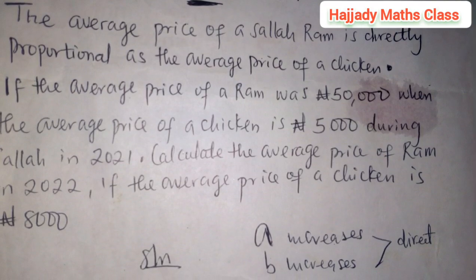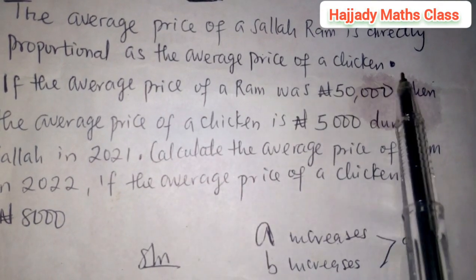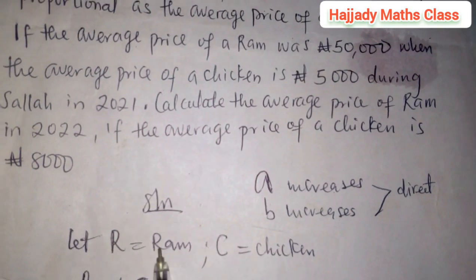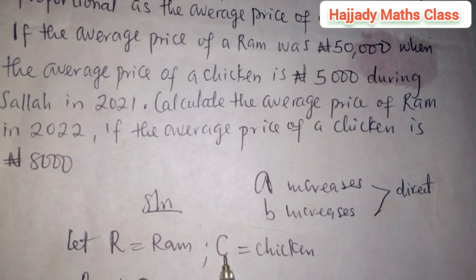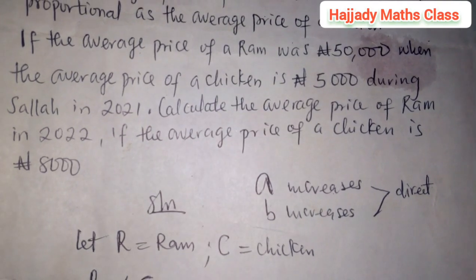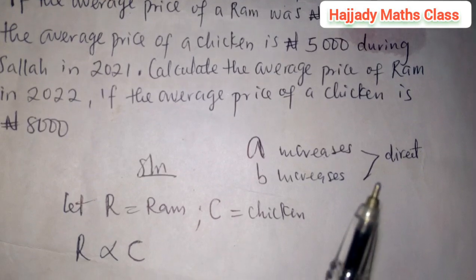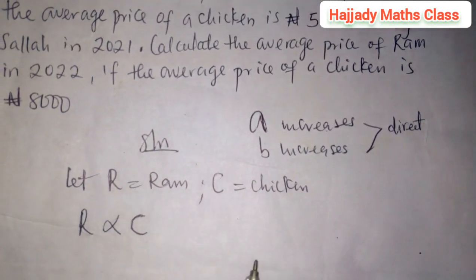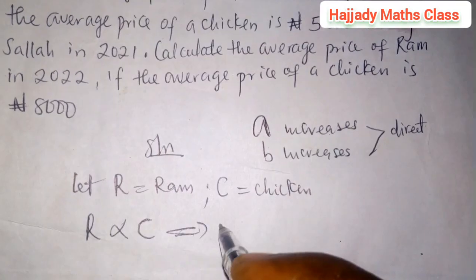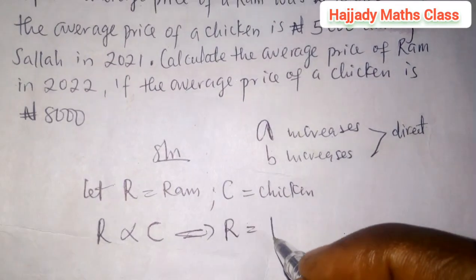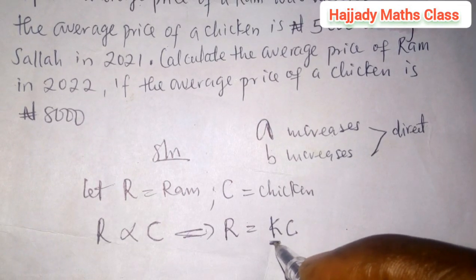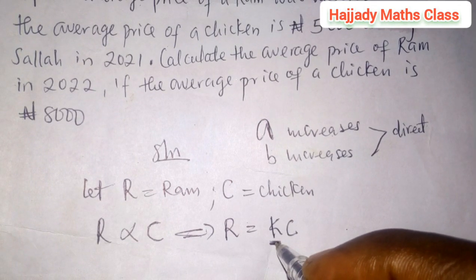Now let's go straight to our question. Let R be equal to the gram, and let C be equal to the chicken. So using the direct variation sign, we interpret this as R equals KC, where K is the proportionality constant.